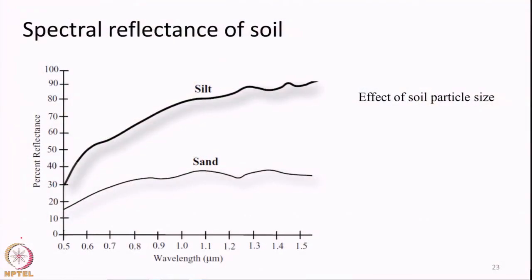The spectral reflectance of soil is a very simple curve. It is not as complex and will not have any kind of complex dips and peaks as that of vegetation. An example is given in this slide. In general, the reflectance curve of soil may not have a lot of the peaks and valleys that we observed in the reflectance curve of vegetation. These characteristic features will be absent.